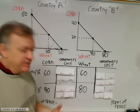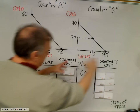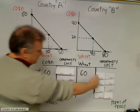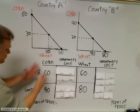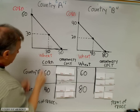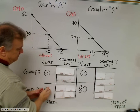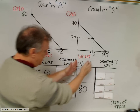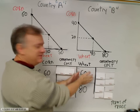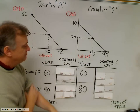A fail-safe method to get everything right is to set up a graphic organizer similar to this. We have our two countries — country A and country B — in rows. In the first column we have corn: country A can produce 60 bushels, country B 40 bushels. In the next column we have wheat: 60 bushels for country A, 80 bushels for country B. We'll use these numbers to calculate opportunity costs.